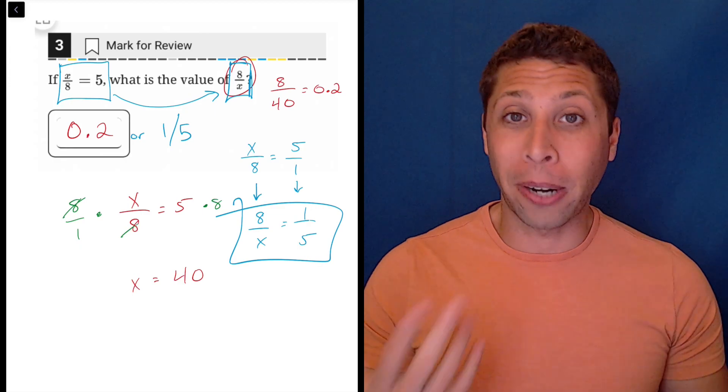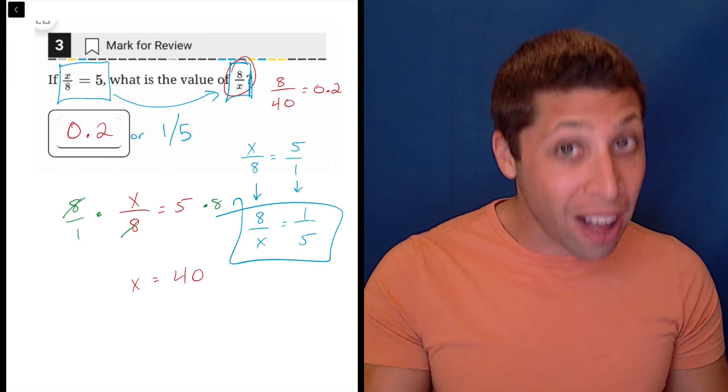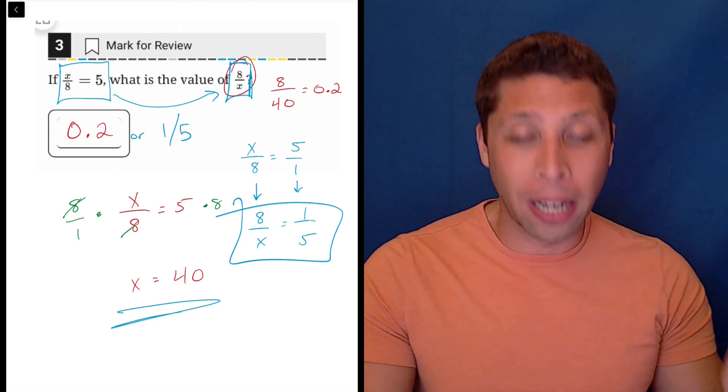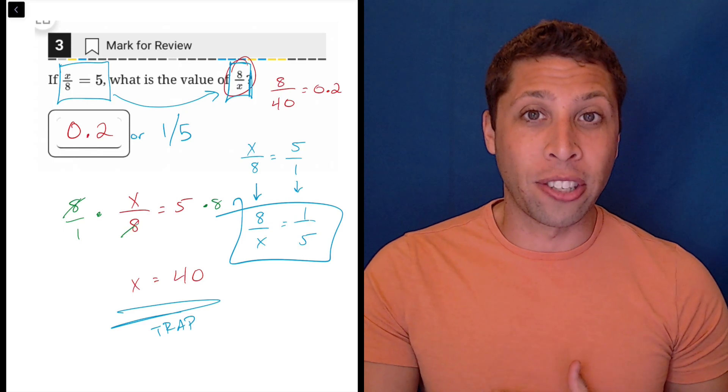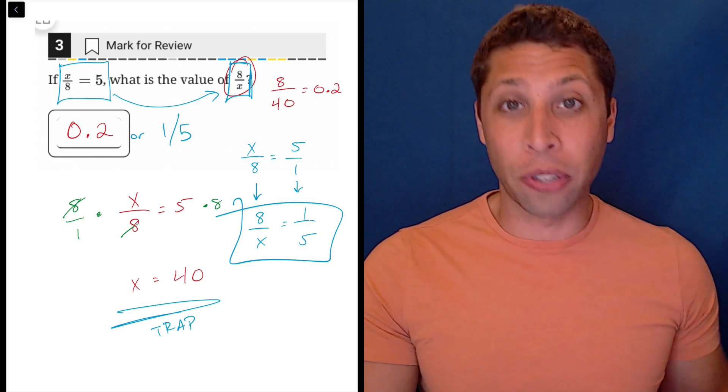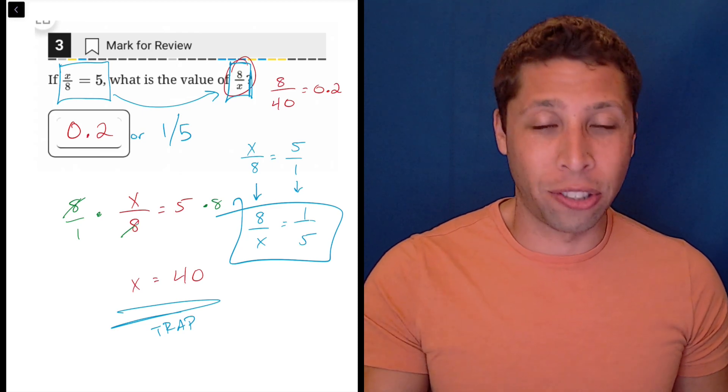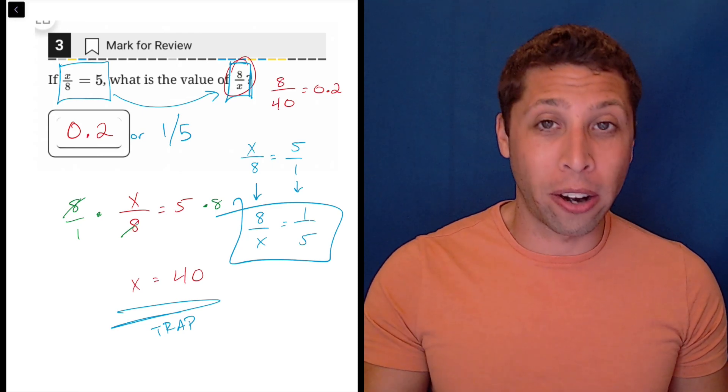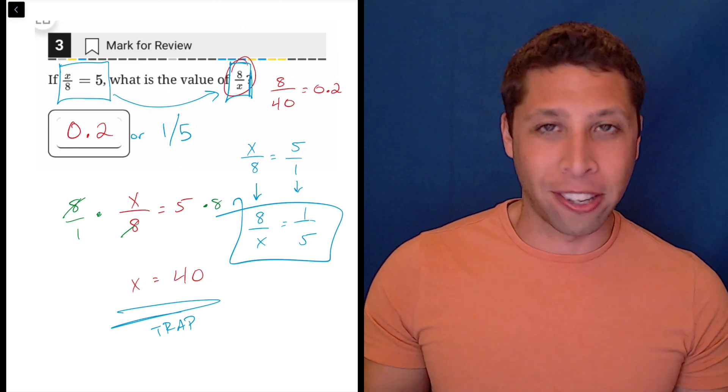But even if your robotic brain just took over here and you just wanted to solve algebraically, that's fine as long as you don't let your robot brain stop here. That's what most people do with the SAT is they get really excited when they get X equals a number and they stop even when the question asks them to do one extra step. So just make sure you're always aware of what the SAT is asking you for. It might not be the just standard X that you're used to.